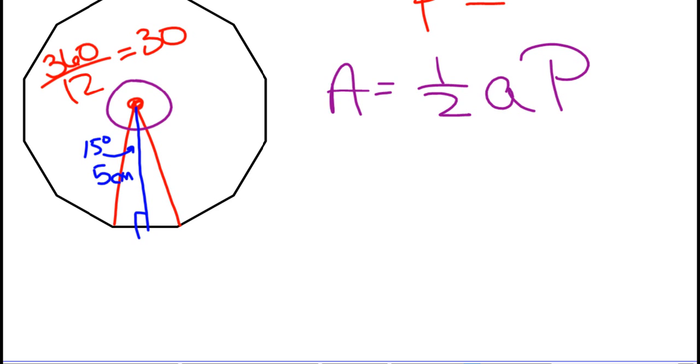So ultimately, I'm going to need the apothem and the side length, because I have neither. So when I do this, I'm going to have, what is the trick that I like to do? What do I really just need? What do I need to focus on? That part of the triangle, the central triangle. And so I really just need the half of it.